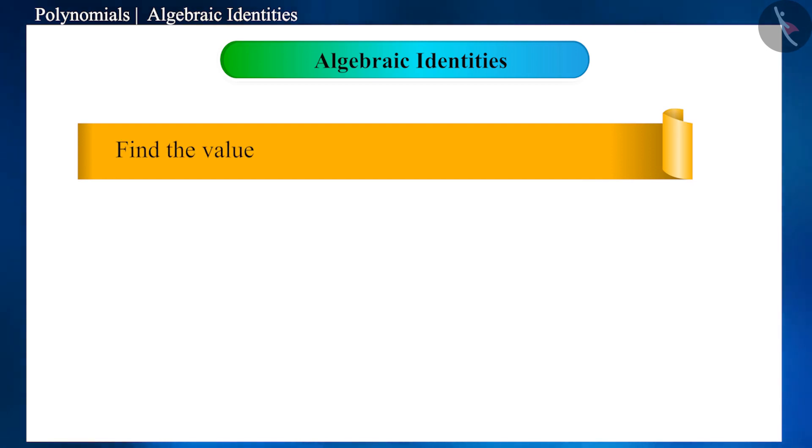Find the value of 98 to the power of 3 using the appropriate identities. You must have seen such questions, how would you solve it?